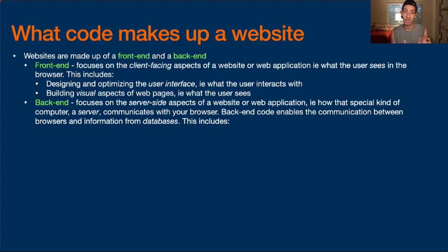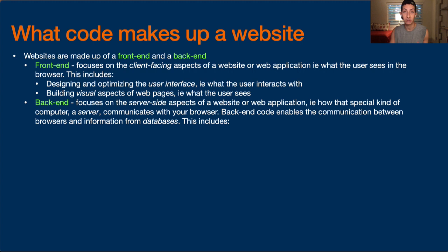You get the front-end, and the front-end is running on your browser — that's what you see. As the website works and you interact with it, the front-end is sending requests to the back-end. A request is literally an asking of something from that server where the website is hosted. When you visit a URL, that's the first request — you say 'give me the code.' After that, under the hood, the code running on your front-end in your browser is making requests to the back-end.